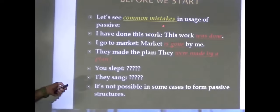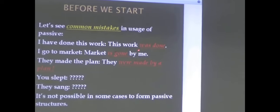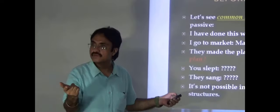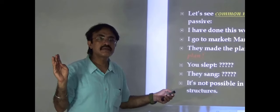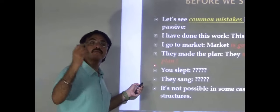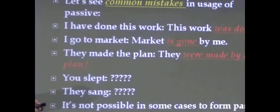Let us see some common mistakes. 'I have done this work' — the passive is 'this work has been done by me,' not 'this work was done.' Work is 'it,' so it takes 'has'; whereas I, we, you, they carry 'have,' and he, she, it carry 'has.' 'I go to market' — 'market is gone by me' is wrong because 'go' is intransitive here.